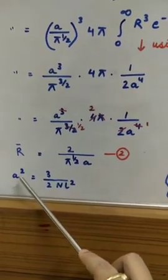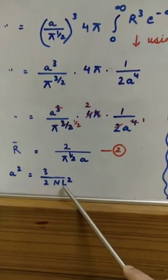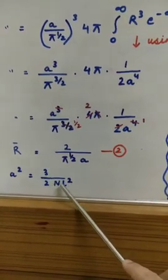Now we know earlier we have studied that a² is equal to 3 upon 2nl². You have to be very clear, see nl² is below.